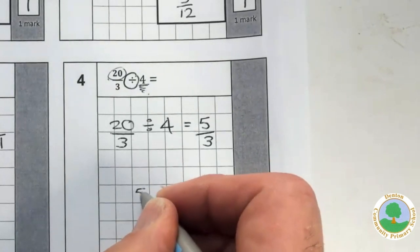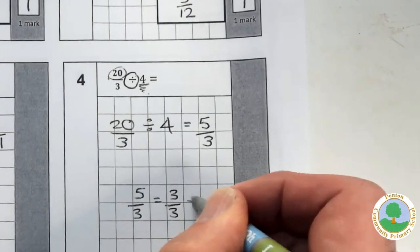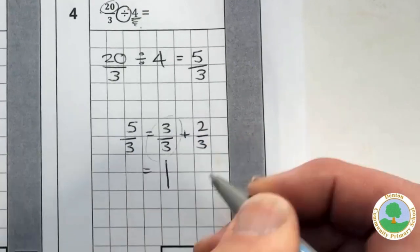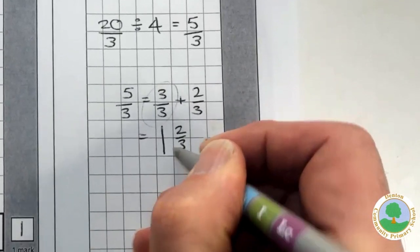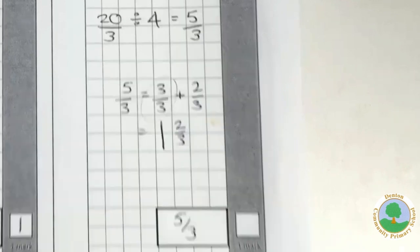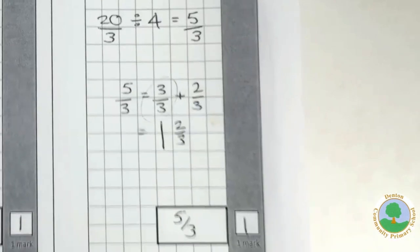Now, of course, you will probably know that five-thirds is equivalent to three-thirds and two-thirds and three-thirds is equivalent to one. So you could write one and two-thirds if you want. But again, just like I said, you will get the mark for leaving your answer, unless it specifically says otherwise, just like that.